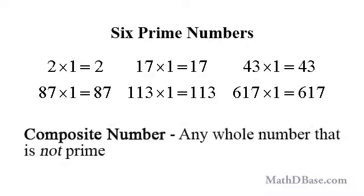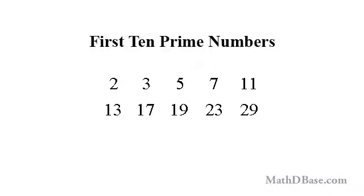A composite number is any whole number that is not prime. The first ten prime numbers are 2, 3, 5, 7, 11, 13, 17, 19, 23, and 29.